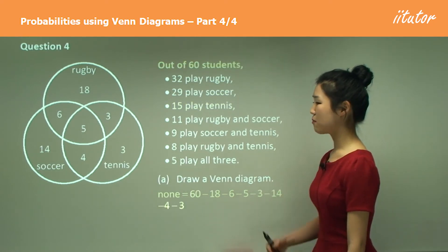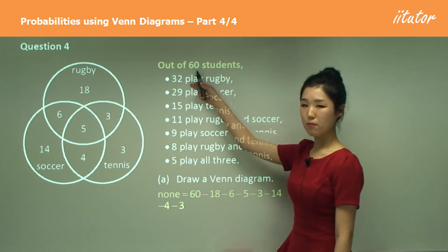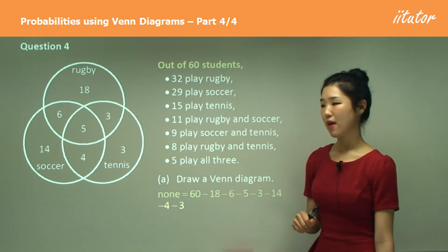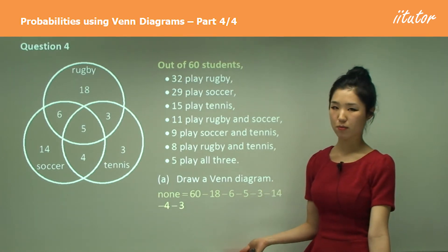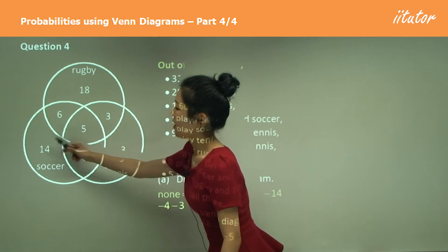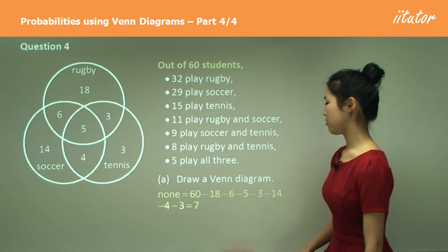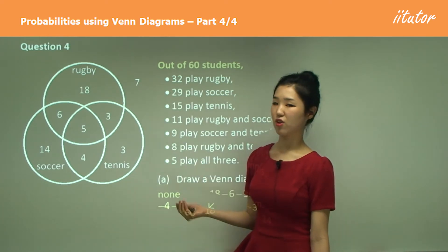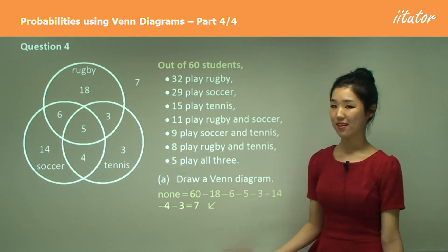Make sure you add them all up and check if it adds up to 60, because there are 60 students altogether. If it does not add up to 60, the reason is that some people don't play any sports. So you add all of those components up and subtract from 60, and you should get seven. So seven people play none — put that outside the circles.